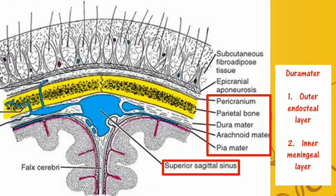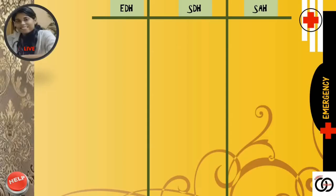The arachnoid mater — follow the black line — is closely applied to the dura, separated by the subdural space. And the pia mater — follow the purple lines — lines every indentation of the brain. The space between the arachnoid and the pia mater is known as the subarachnoid space. Keeping in mind these basics, now let's differentiate between EDH, SDH and SAH.